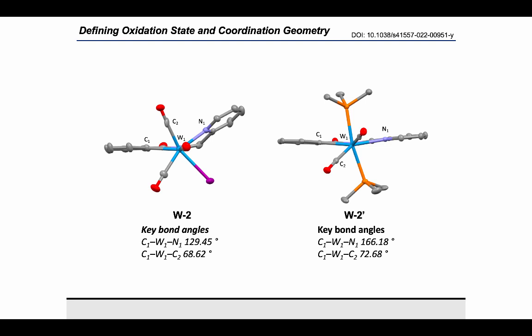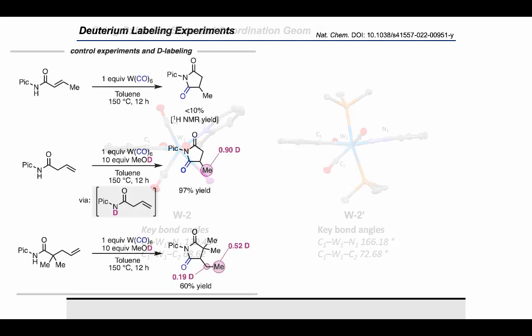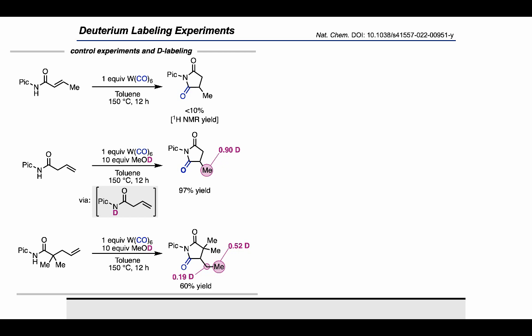With strong evidence for the proposed underlying coordination chemistry, oxidation states of tungsten, CO migratory insertion, and reductive elimination steps, I then conducted deuterium labeling experiments to gain insight into the N-H oxidative addition and H insertion steps.